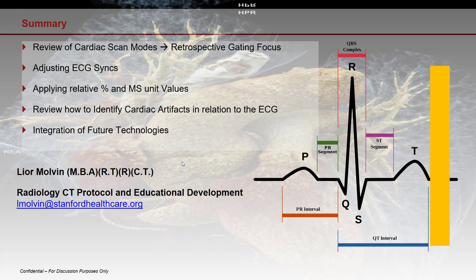In summary, there are plenty of modes available — we prefer retrospective gating mode. You'll need to know how ECG syncs work and how to adjust them, when to apply percentage versus millisecond unit values, and how to identify cardiac artifacts in relation to the ECG — best done by looking through the plane in coronal or sagittal. If you have an irregular or unstable heartbeat, manually place your reconstructions at the end of the T wave in the general systolic region to get really good pictures. Thank you very much for your time.